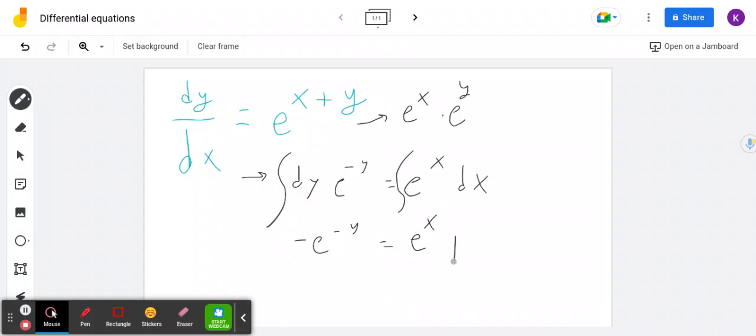And since we're solving for y, we're multiplying both sides by negative 1. So we get e to the negative y is equal to negative e to the x. And then minus c, but minus c is another constant, so I'm just going to say plus c again.